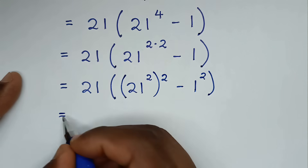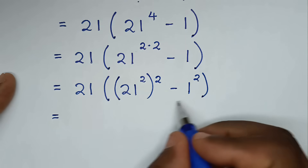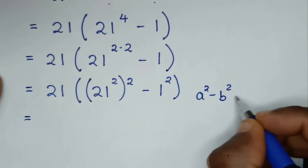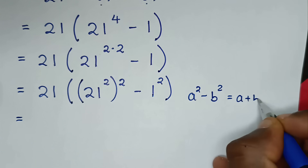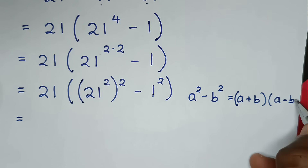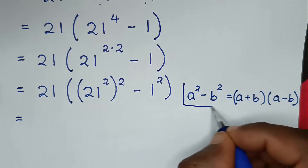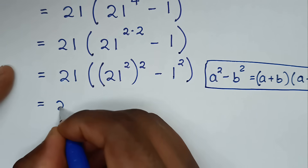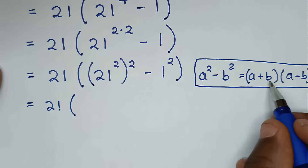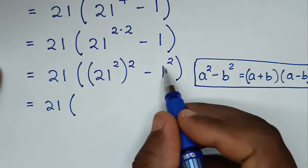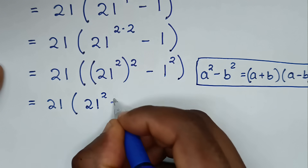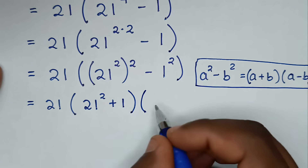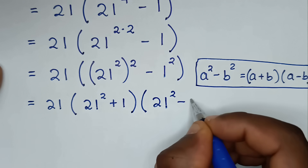This part is now in the form of difference of two squares, so we apply the rule: a squared minus b squared equals (a plus b)(a minus b). Applying this form, it becomes 21 times bracket, (21 squared plus 1) times (21 squared minus 1).